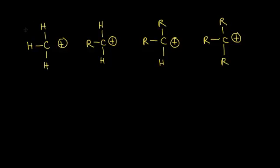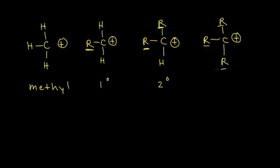The carbocation on the far left is called a methyl carbocation. If you replace one of those hydrogens with an alkyl group, the carbon that has the positive charge is now directly bonded to one other carbon — we call this a primary carbocation. Moving to the third example, the carbon with the positive charge is bonded to two other carbons, so we call that a secondary carbocation. And finally, when the carbon with the positive charge is bonded to three alkyl groups, we call this a tertiary carbocation.